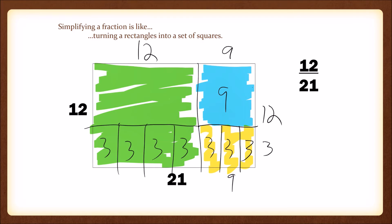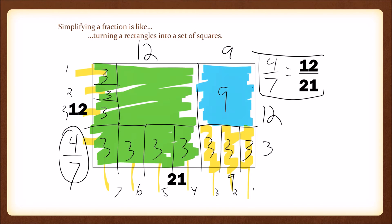What we realize is that this original rectangle is 4 of those 3 by 3 squares tall and 7 of those 3 by 3 squares across. Which means a 12 by 21 rectangle can be broken down into 4 by 7 squares, meaning 4 sevenths is a simplified version of 12 twenty-firsts.